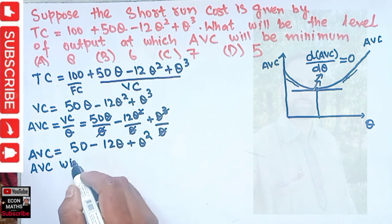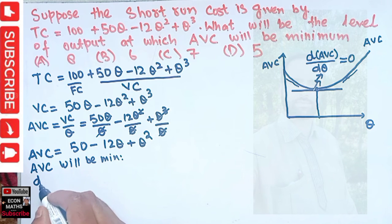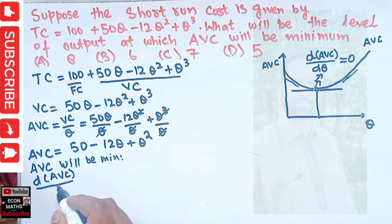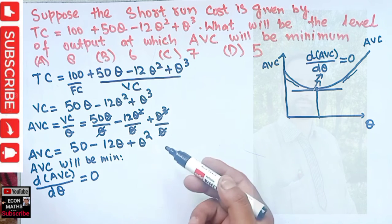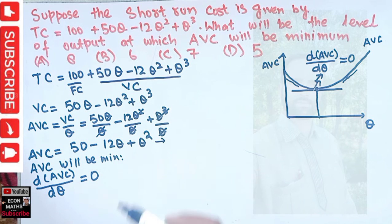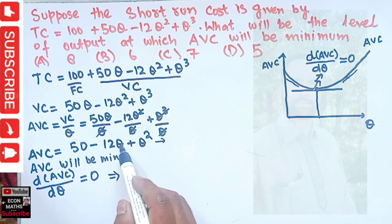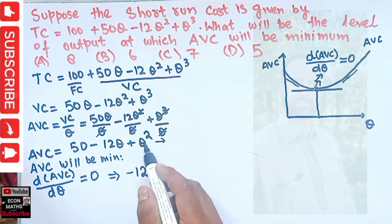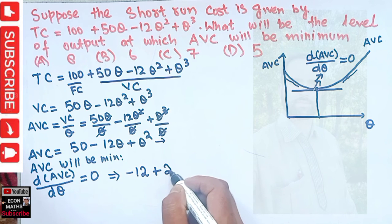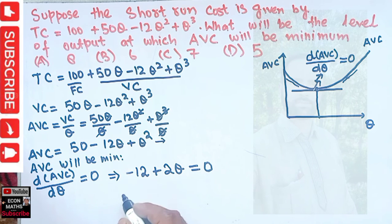Average variable cost will be minimum when the derivative of AVC with respect to quantity equals zero. So we differentiate AVC = 50 − 12q + q² with respect to q. The derivative of the constant 50 is zero, the derivative of 12q is 12, and the derivative of q² is 2q. This gives us d(AVC)/dq = −12 + 2q, and we set this equal to zero.